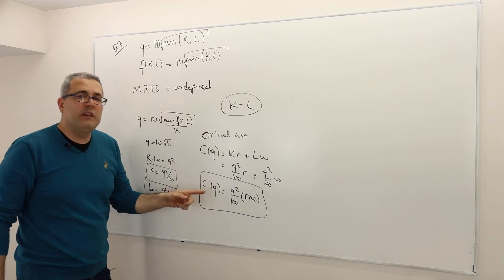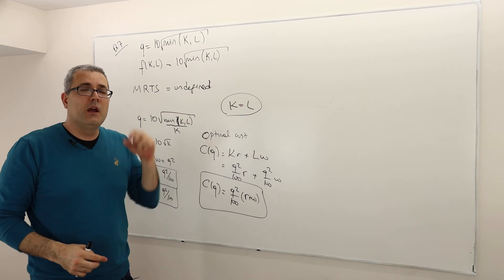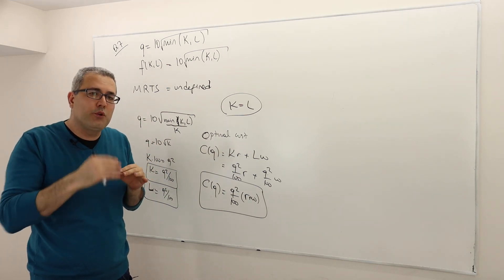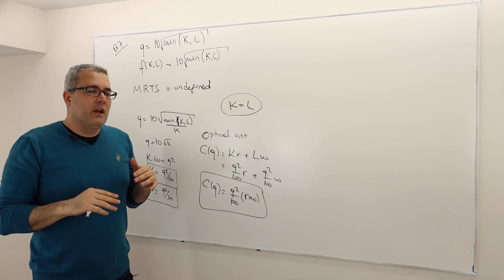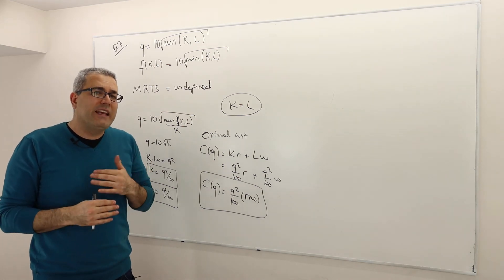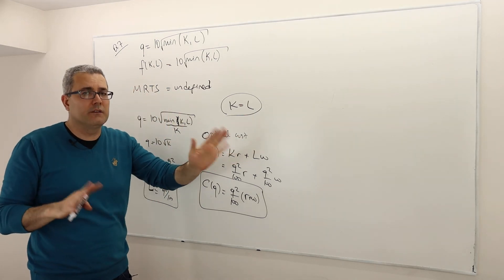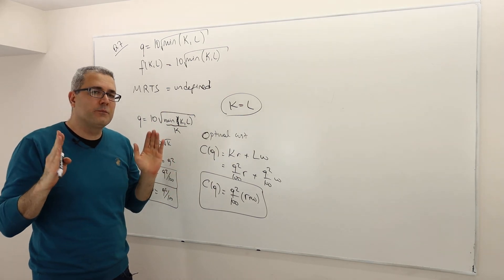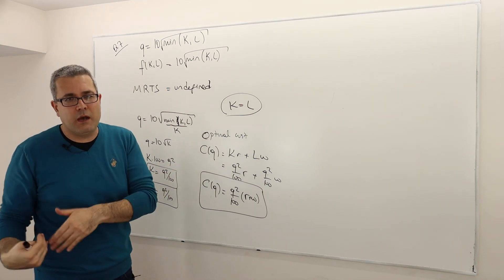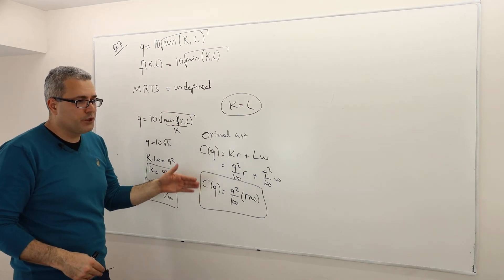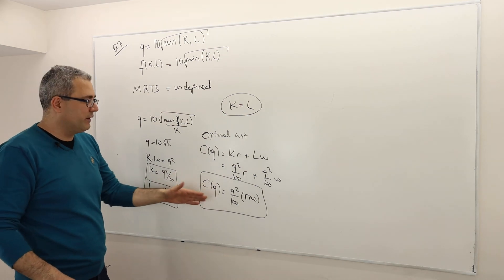The cost function is C(Q) = K·R + L·W = (Q²/100)·R + (Q²/100)·W = Q²/100 · (R + W). The only variable here is Q; R and W are fixed numbers for this firm. In this chapter we assume producers are price takers in the input market as well — regardless of how much input they use, they cannot change input prices.